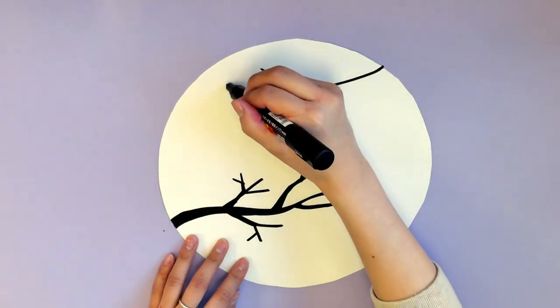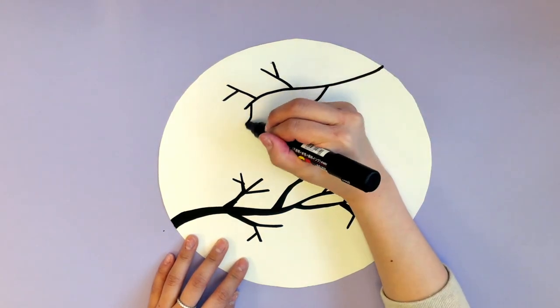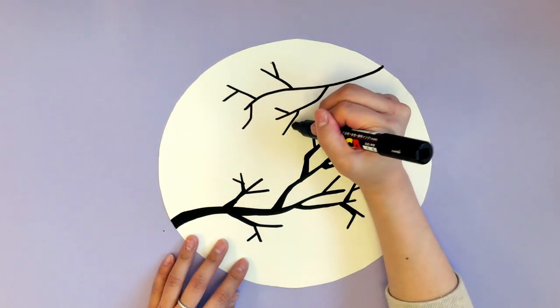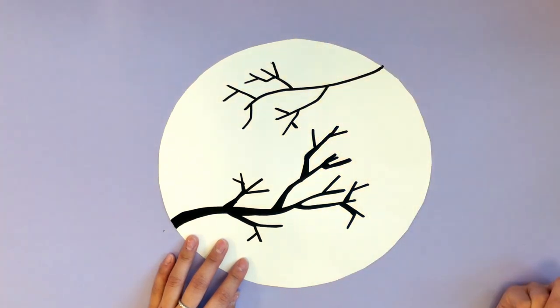And then add some mini branches alongside it. And just like before, we're going to make the branch thicker towards the trunk and thinner towards the end. Color that in.